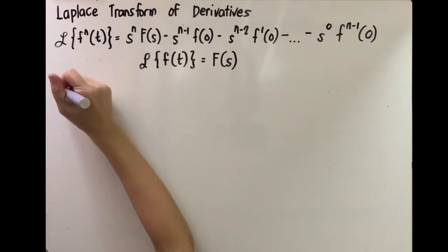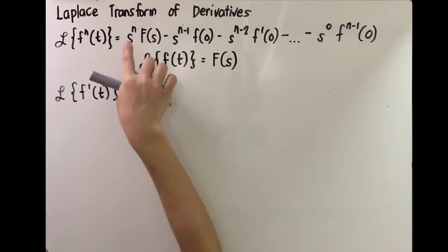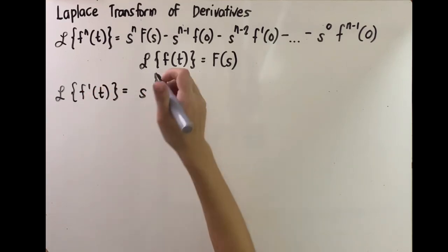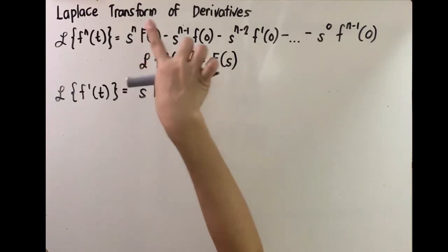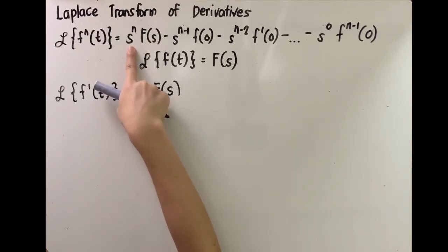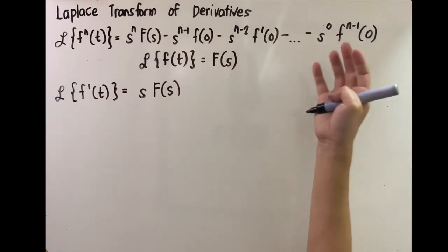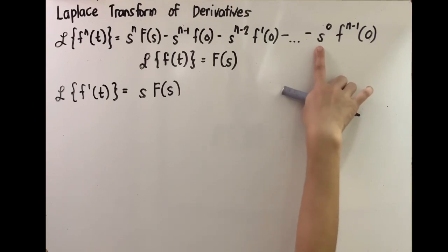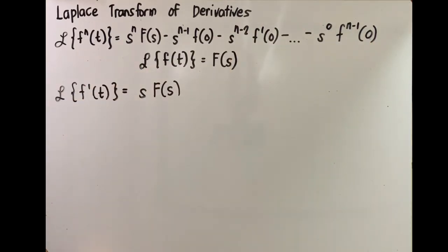Let's try. Let's say we're solving for the Laplace transform of f prime of t, which means it's the first derivative. Since it is the first derivative, we start with s raised to 1 — same order. Then it is multiplied with the Laplace transform of the original function, F of s. The sequence is: F of s, f of 0, and then the derivatives. All are multiplied by a variable s that starts with the same order as the given derivative and decreases by 1, until we reach s raised to 0 — one order lesser than the given.